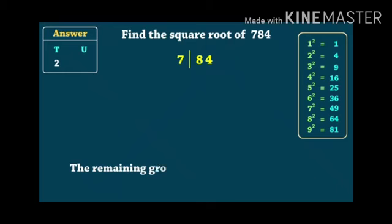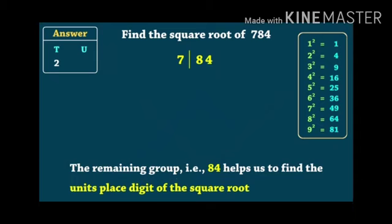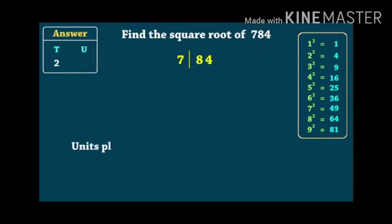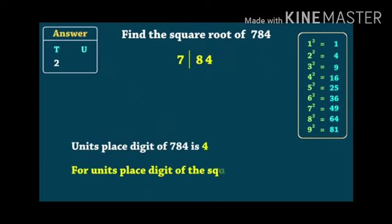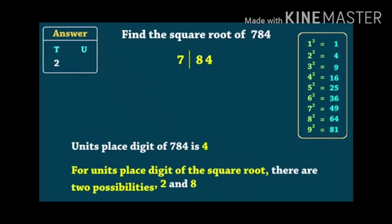Now, let us look at 84 which will help us find the units place digit. You can see that the units place of 2² and 8² is 4. So, the 2 possibilities are 2 and 8.